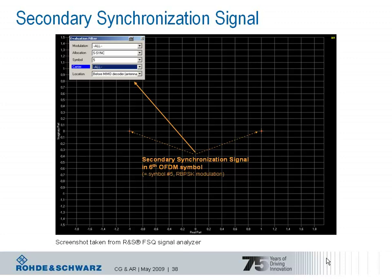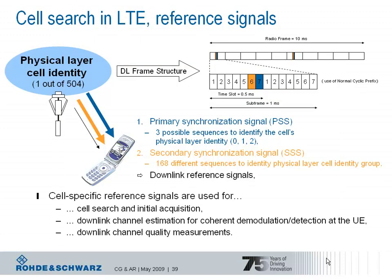What about the time domain? Looking at the downlink frame structure, we can see that the synchronization signals are transmitted in the first subframe (subframe number 0) and in the sixth subframe (subframe number 5), so the repetition rate for the synchronization signals is 5 milliseconds. The two synchronization signals are always transmitted in the first time slot of that subframe, where the primary synchronization signal occupies the last OFDM symbol and the secondary synchronization signal occupies the symbol before.